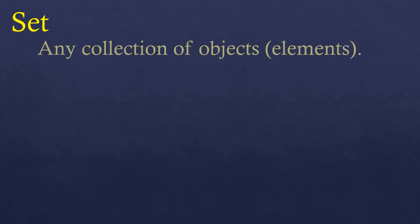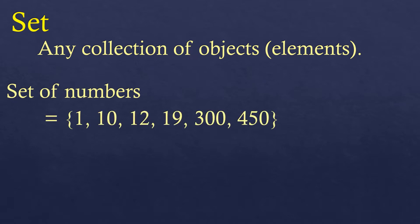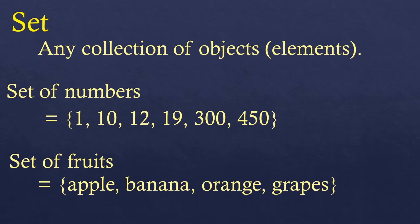So first, what is a set? A set is any collection of objects — we call them elements or members of a set. For example, we have a set of numbers: 1, 10, 12, 19, 300, 450 — whatever you can put in that set as long as it's numbers. Or a set of fruits, for example: apple, banana, orange, grapes, or whatever fruits you put in that set.